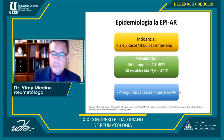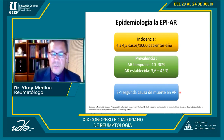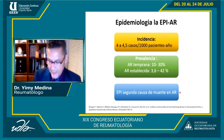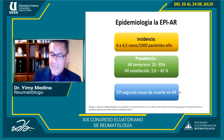La incidencia es de 4 a 4.5 casos por mil pacientes por año. La prevalencia varía según si la artritis reumatoide es temprana (10 al 30%) o establecida (3.6 al 42%), dependiendo de los criterios de clasificación. La enfermedad pulmonar intersticial es la segunda causa de muerte en la artritis reumatoide, y sin embargo todavía tenemos mucha incertidumbre.